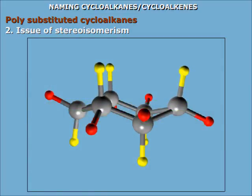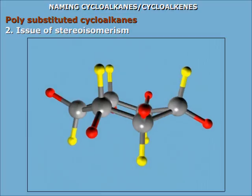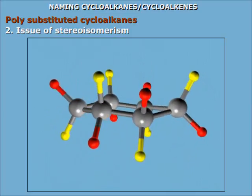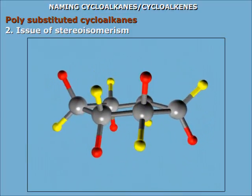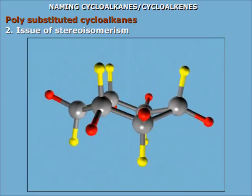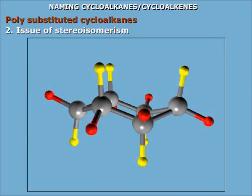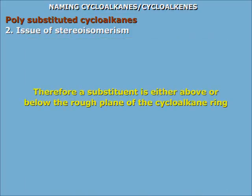This chair form readily flips into another form — called a chair flip — in which the carbon that was the headrest becomes the footrest, and the carbon that was the footrest becomes the headrest. After the flip, the axial bonds become equatorial bonds and vice versa. Note carefully that bonds above the plane of the ring are still above it, and bonds below the plane are still below it. Therefore, it is reasonable to imagine a substituent's position as either above or below the plane of the ring.